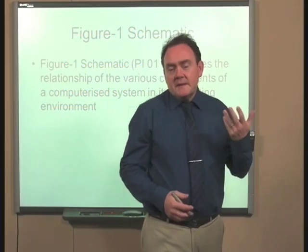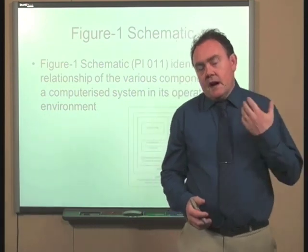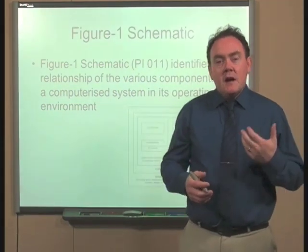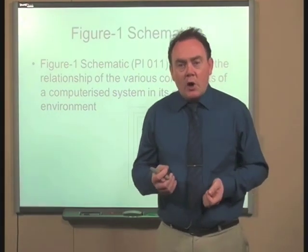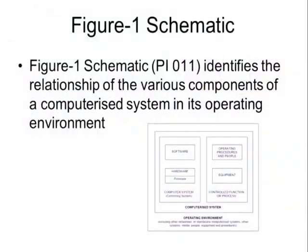Specifically, the ISPE GAMP 5 document refers to Figure 1 from the PICS document. This particular figure identifies the relationship of the various components of a computerised system in its operating environment.